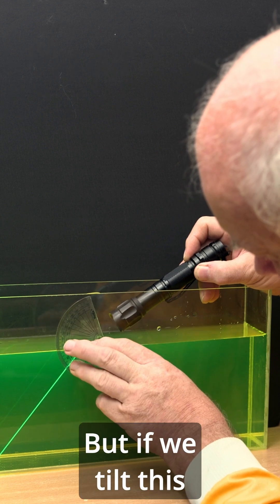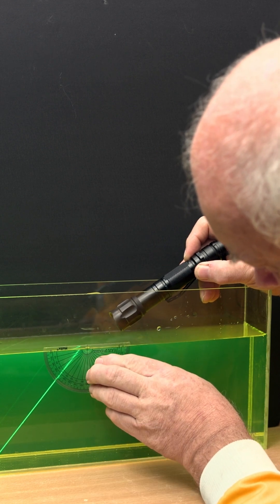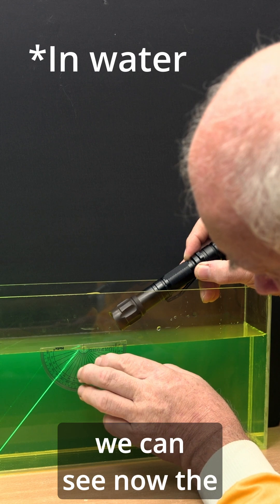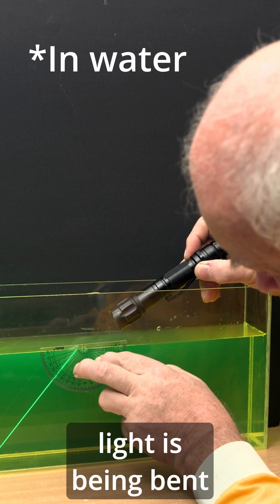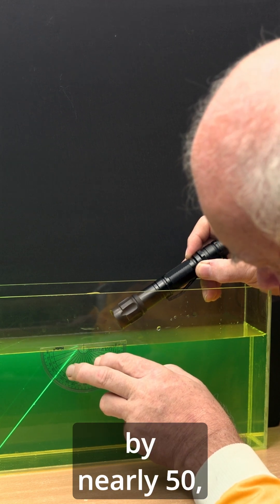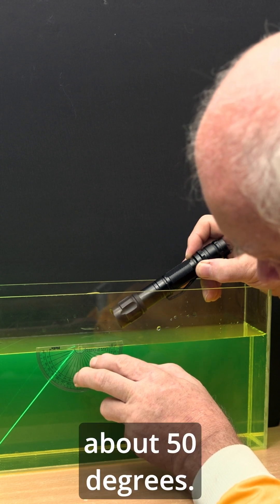But if we tilt this round the other way, we can see now the light is being bent by nearly 50, about 50 degrees.